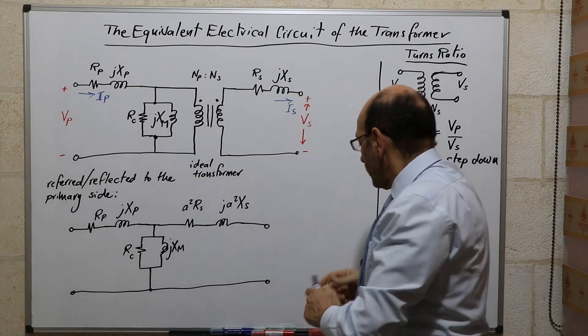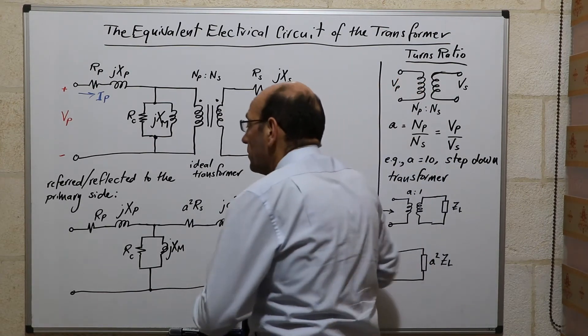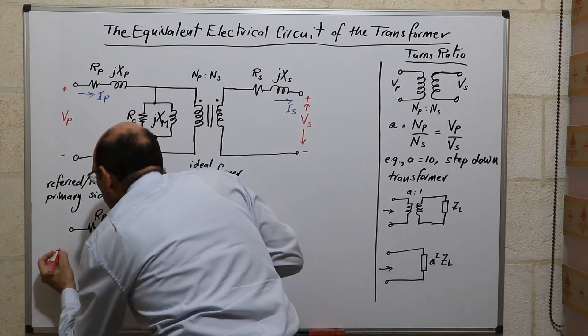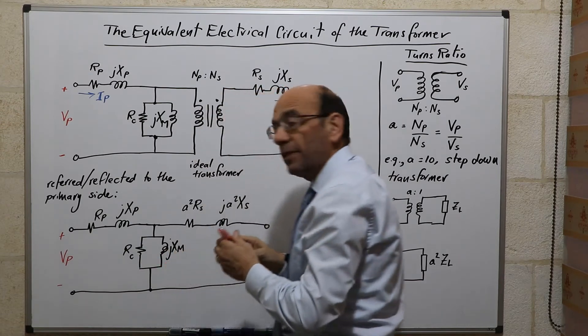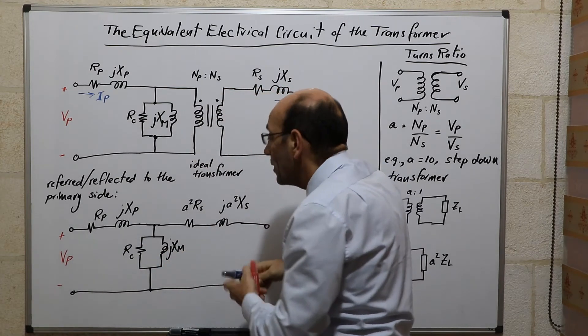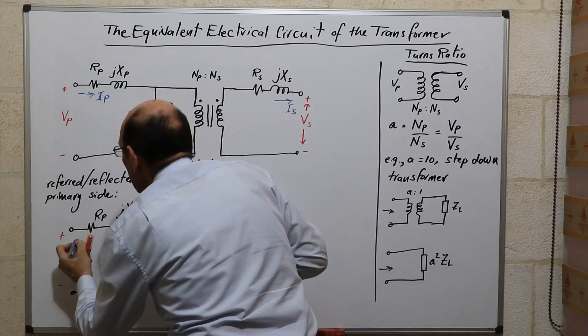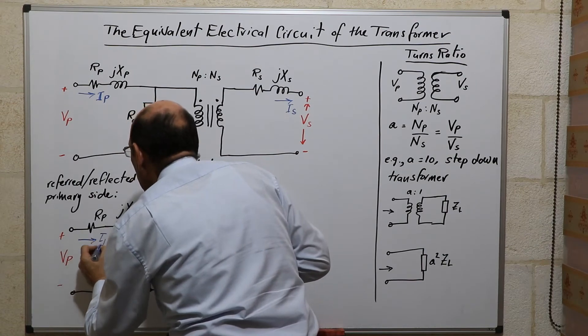We also want to represent the voltages, so Vp will remain the same because it's referred to the primary. So as seen by the primary, this will still be Vp, and this will remain as Ip as seen by the primary.